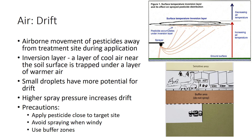Droplet size is another important factor in the movement of spray particles away from the application site. Small droplets fall through the air slowly and have a greater potential to drift. Large droplets fall faster and are more likely to fall to the ground. Applications that release the pesticide as close to the target site as possible reduce drift. Spray pressure also affects drift by influencing the size of spray droplets. Higher pressure decreases droplet size and increases drift.